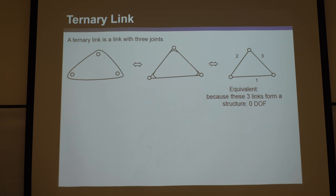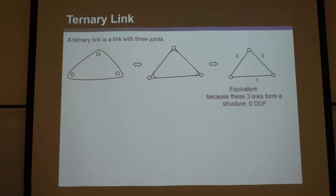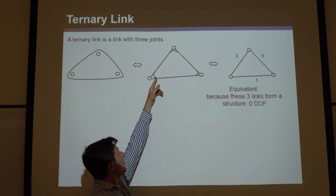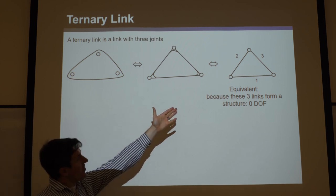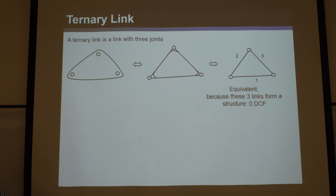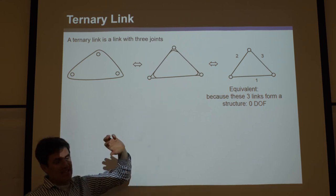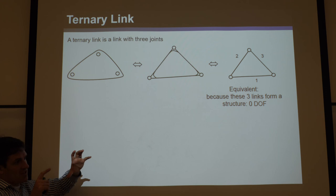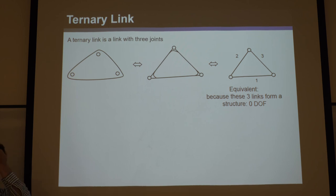A ternary link is a link with three joints on it. The clearest example shows a link with three circles on it for three revolute joints — that's a ternary link. A triangular shape with three lines might look like three separate binary links, but if those lines are connected with little curves, they are one and the same link. With three circles at the corners as three joints, it's a ternary link.